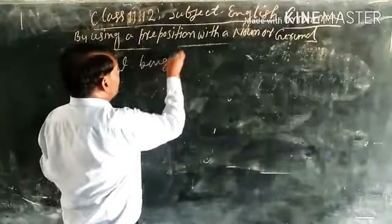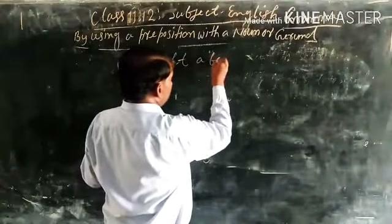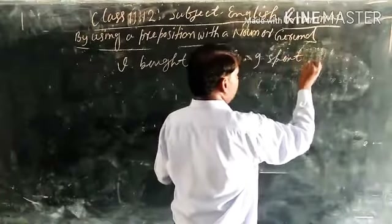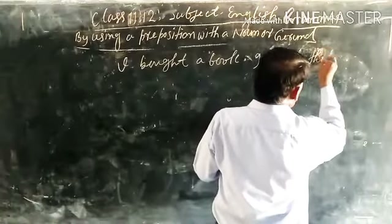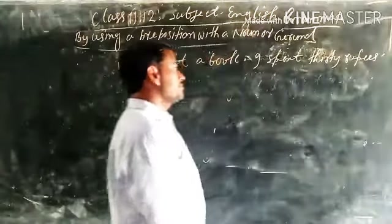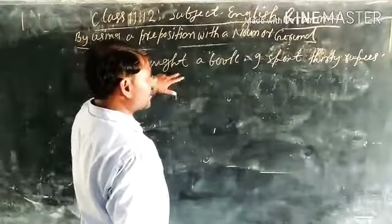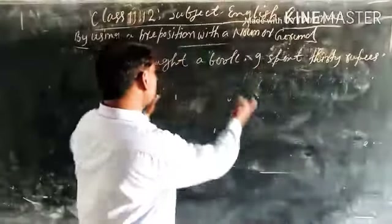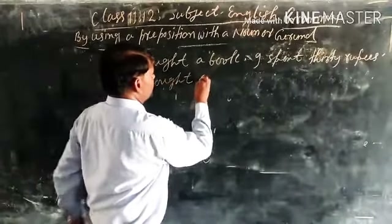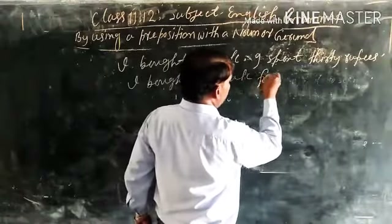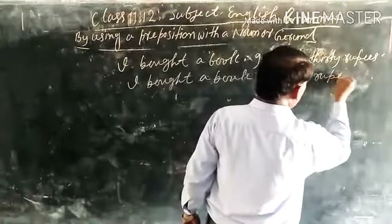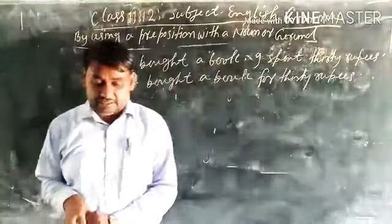Next example: 'I bought a book. I spent 30 rupees.' Here are also two clauses — principal clause and subordinate clause. First, you write the principal clause: 'I bought a book.' After it, you add the appropriate preposition 'for' and the noun phrase. The combined sentence becomes: 'I bought a book for 30 rupees.'